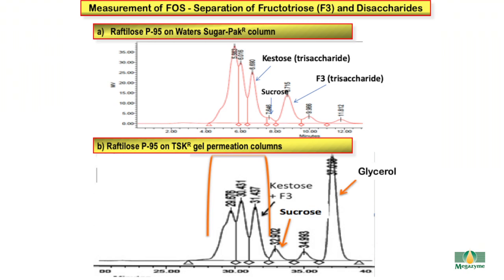In AOAC method 2009.01, a water sugar pack column was used to fractionate the oligosaccharides, but with this column the trisaccharide fructotriose elutes after sucrose and thus by definition is not measured as dietary fibre. Consequently, we decided to switch to TOSO TSK gel permeation columns, where fructotriose elutes at roughly the same point as other trisaccharides and thus is measured as dietary fibre. In fructooligosaccharide mixtures, the F3 fraction can represent 15 to 20% of the total amount of fructooligosaccharides.